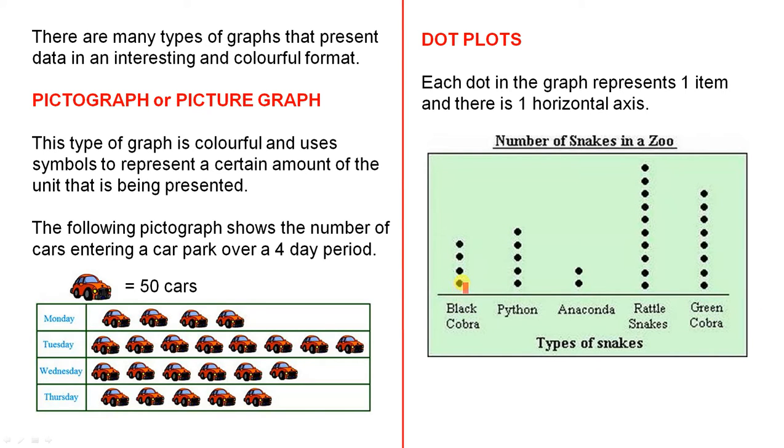And here we have the type of snakes on the horizontal axis. So for example, as far as the black cobra, there are four of those in the zoo. The python, there are five of those. And so on.